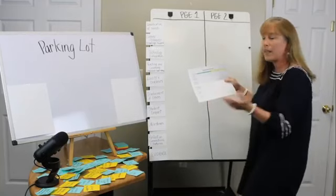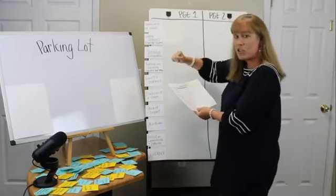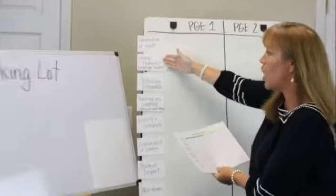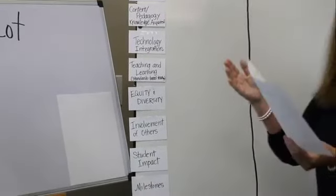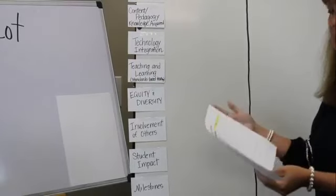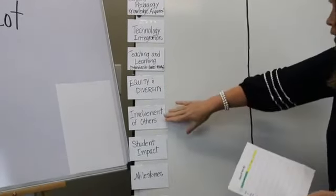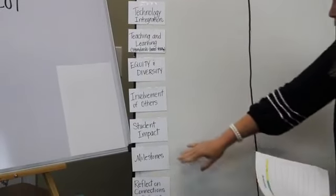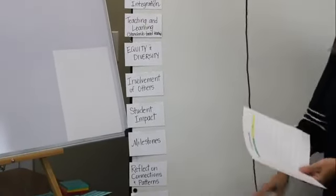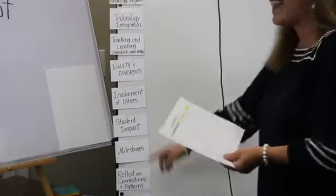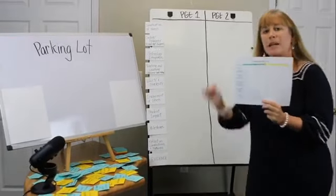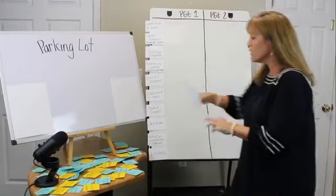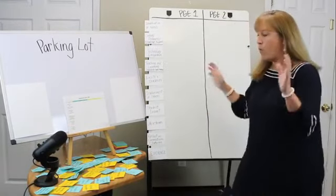All right, so I'm taking this and I've built it out on my big board here so that you all can see it really well and we can really unpack it. So at the top I have identification of needs, then I have content pedagogy knowledge acquired, I have technology integration, I have teaching and learning, that standards-based teaching that would be NBPTS standards-based equity and diversity, involvement of others, student impact, milestones and reflection, connections and patterns. And then I do have evidence down there but it's not really on your rubric, I just put it there because I'm going to need to tell you something about that.